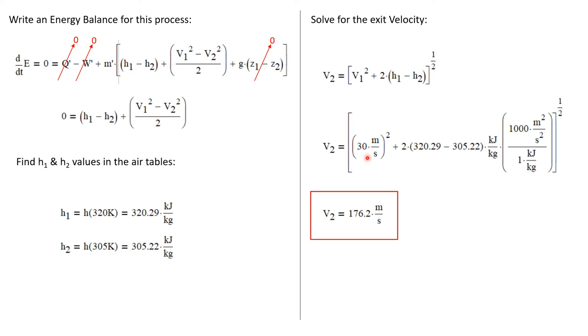We can put our values in. We know that V1 was given as 30 meters per second. We just pulled the values of H1 and H2 out of the air table. And I have to convert: one kilojoule per kilogram is equivalent to 1000 meters squared per second squared.